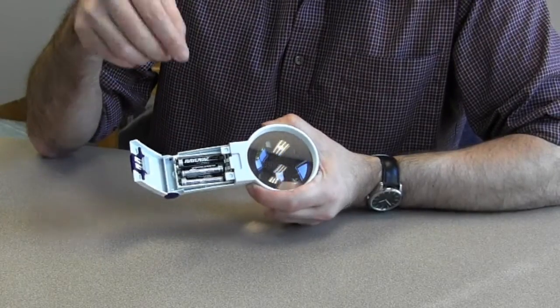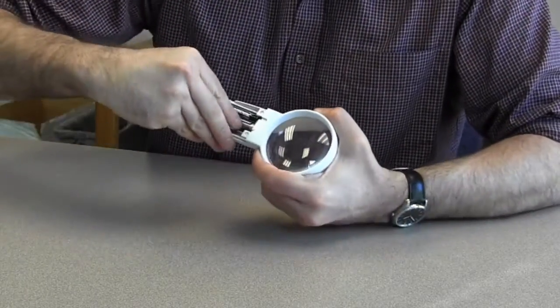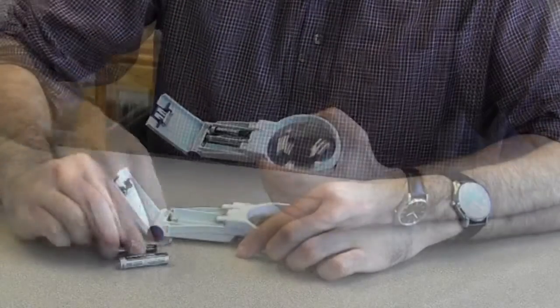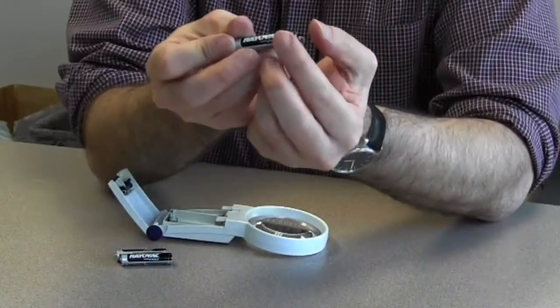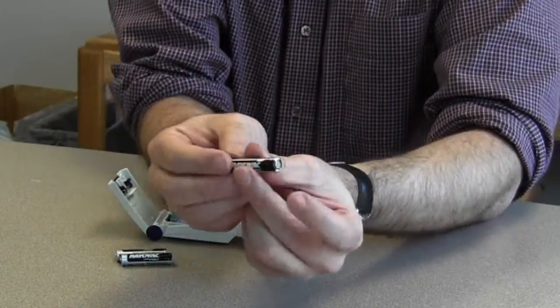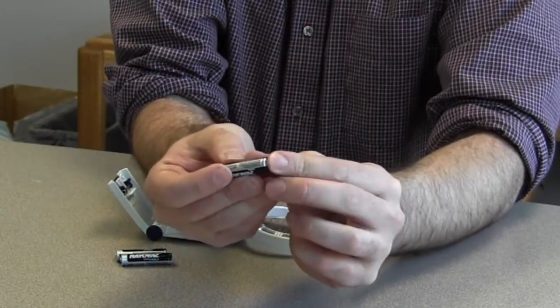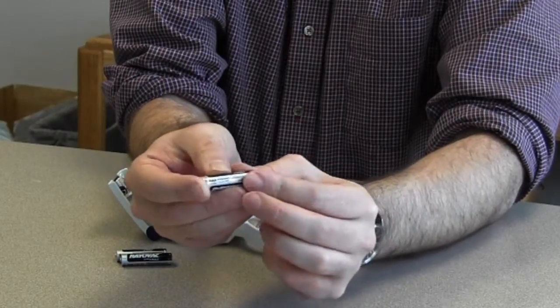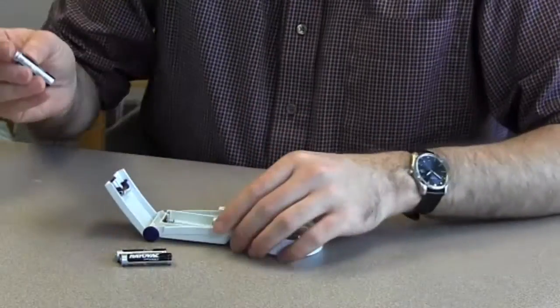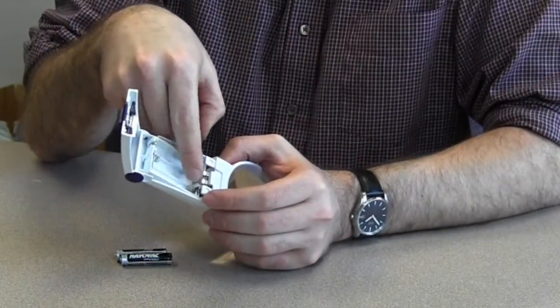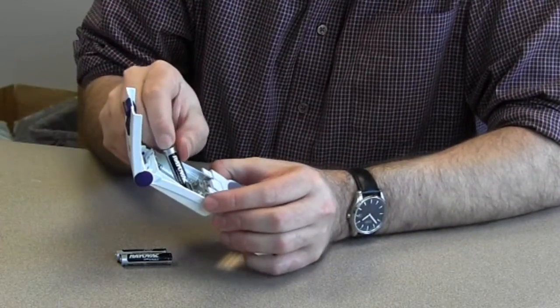I'm going to take them out. First thing to remember with a battery is all batteries have a flat end and a pointy end. So if you feel with your finger, you'll find one side is smooth and the other side is bumpy. That flat end always goes to the spring. So we press it against the spring first.